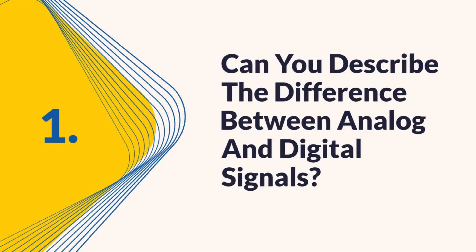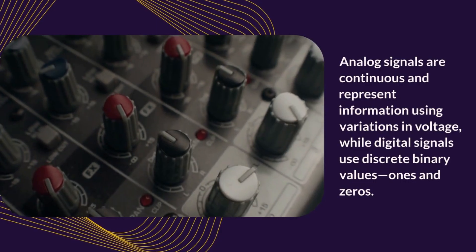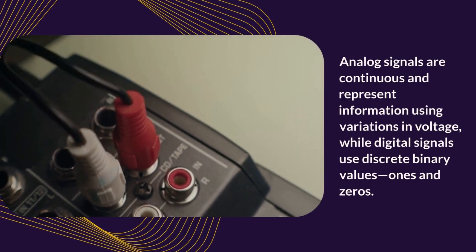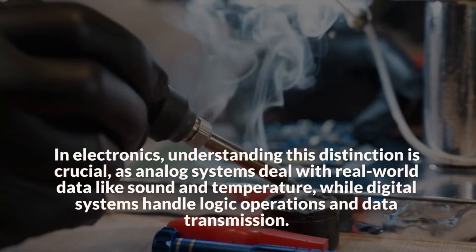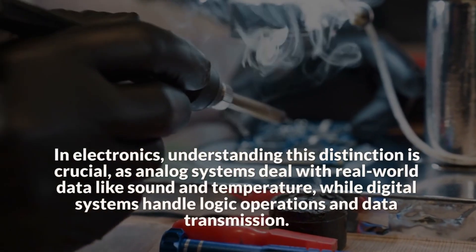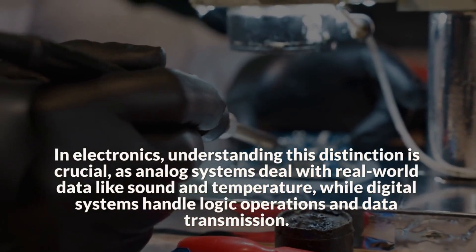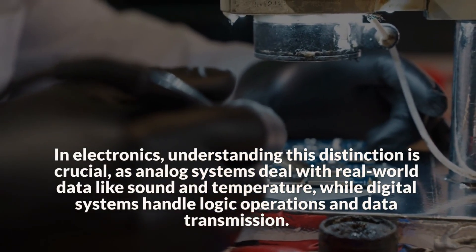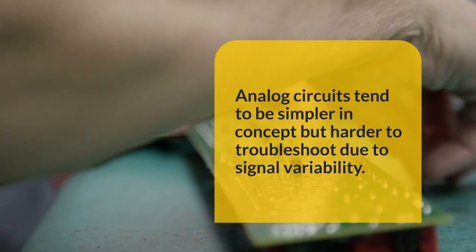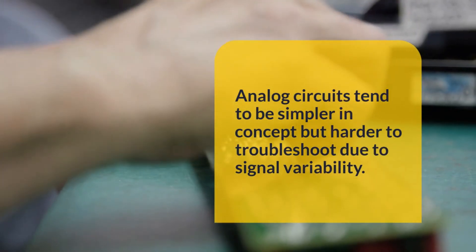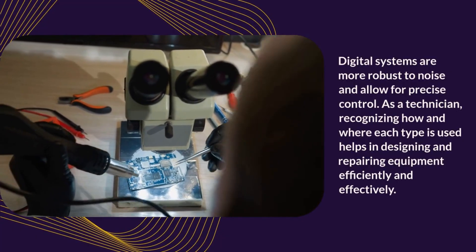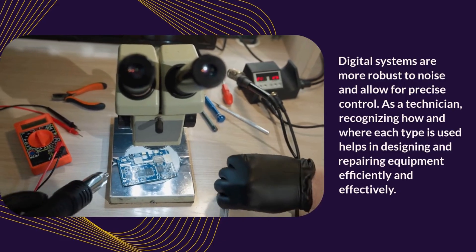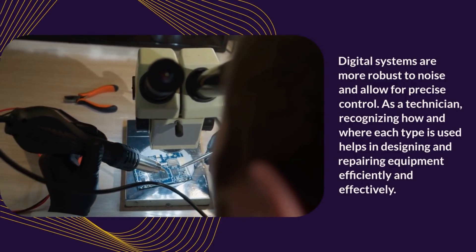Question 1: Can you describe the difference between analog and digital signals? Analog signals are continuous and represent information using variations in voltage, while digital signals use discrete binary values — ones and zeros. In electronics, understanding this distinction is crucial, as analog systems deal with real-world data like sound and temperature, while digital systems handle logic operations and data transmission. Analog circuits tend to be simpler in concept but harder to troubleshoot due to signal variability. Digital systems are more robust to noise and allow for precise control. As a technician, recognizing how and where each type is used helps in designing and repairing equipment efficiently and effectively.